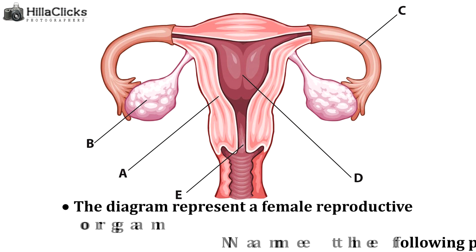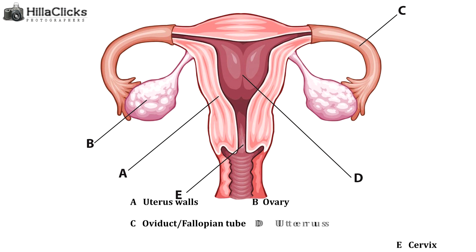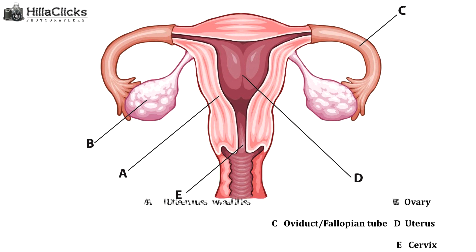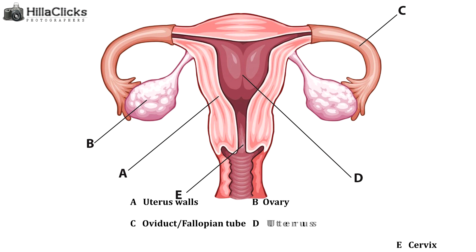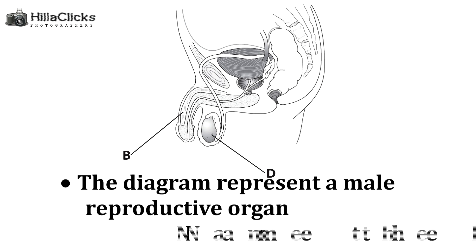The diagram represents a female reproductive organ. Name the following parts: A - uterus walls, B - ovary, C - oviduct, D - fallopian tube, E - uterus, and the cervix.